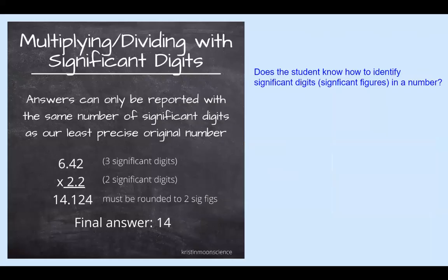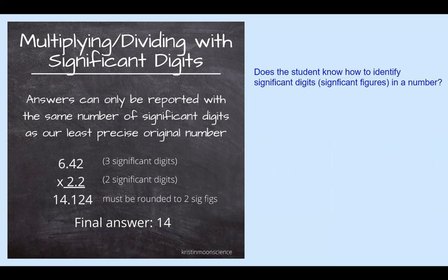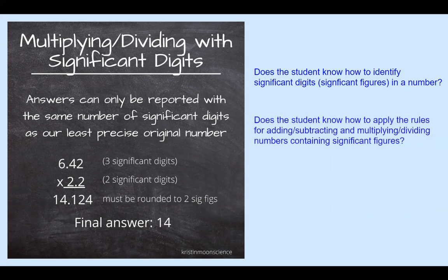A student needs to know how to identify significant digits, also called significant figures, in a number. We use these a lot in chemistry. And then once they've identified significant digits, they need to know the rules for both adding and subtracting numbers with significant digits and multiplying and dividing numbers with significant digits. There are rules that they have to learn and be able to apply.